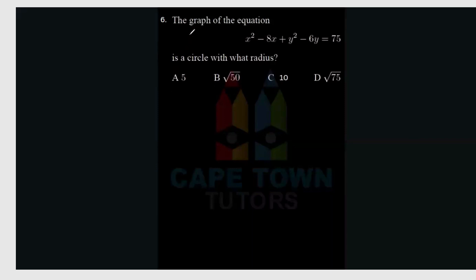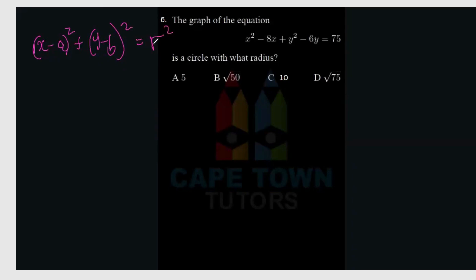The standard form of a circle is x minus a squared plus y minus b squared equals r squared. If you're able to find r squared, you'll be able to find the radius. To do that, we complete the square.